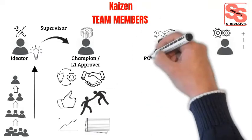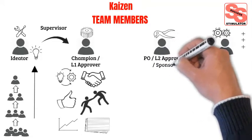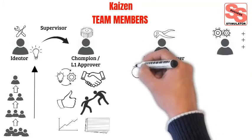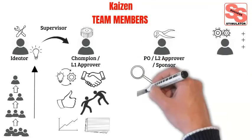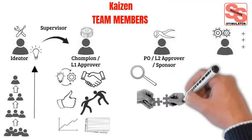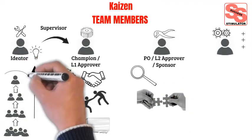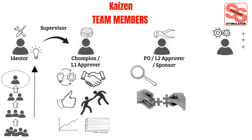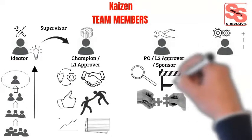The next role is the process owner, or second level approver, or sponsor. This person oversees the process daily, provides insight into the challenges to be addressed, and helps vet possible solutions. The process owner is an executive level resource for the team who will provide support and guidance, and helps to remove any roadblocks that arise.